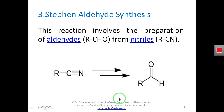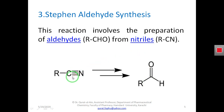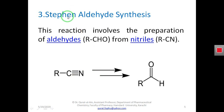The third method is the Stephen aldehyde synthesis, also named after a scientist. In this method, a nitrile — a compound having an R–C≡N group — is used as the reactant. By the Stephen aldehyde synthesis, you produce an aldehyde (R–CHO) from the nitrile.